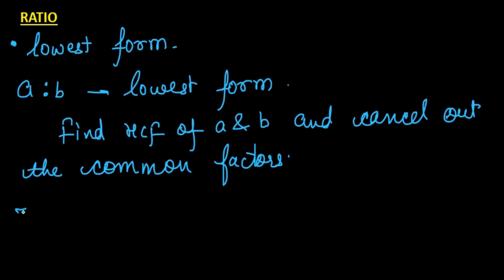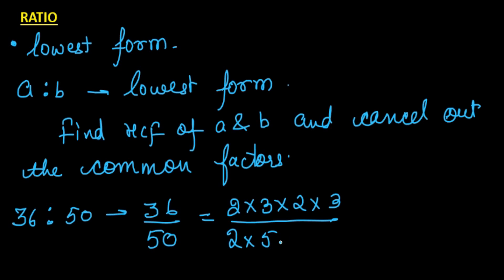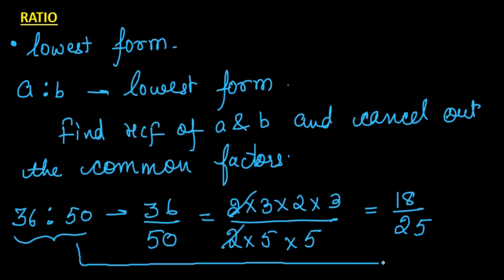For example, suppose we have the ratio 36 is to 50. Ratio is nothing but comparison by division, so 36 is to 50 is 36 over 50. We can write 36 as 2×2×3×3 and 50 as 2×5×5. Cancelling the common factor of 2, we are left with 18 over 25. So 36 is to 50 in its lowest form is 18 is to 25, and it is always preferred to represent the ratio in lowest form.